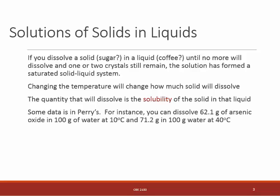For instance, with arsenic oxide — you don't want to drink this one — dissolved in 100 grams of water at 10°C you can only dissolve 62 grams, but you can get nearly 72 grams at 40°C. So you can see that the temperature change makes an appreciable difference in how much you can dissolve.